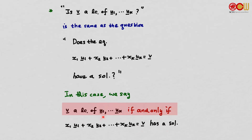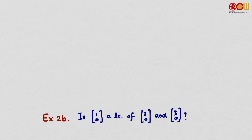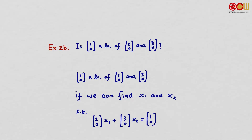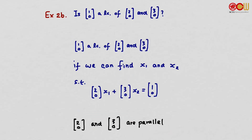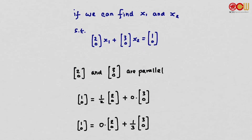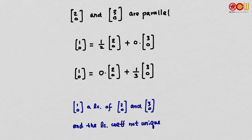Another example: is (1, 0) a linear combination of the vectors (2, 0) and (3, 0)? These two vectors are parallel, so there are two possibilities: infinitely many solutions or no solution. Since (1, 0) is parallel to (2, 0), there are in fact infinitely many solutions — for instance, x1 = 1/2, x2 = 0, or x1 = 0, x2 = 1/3. So (1, 0) is a linear combination of these vectors, but the coefficients are not unique.